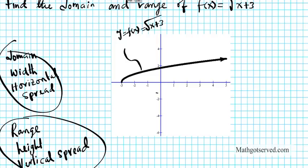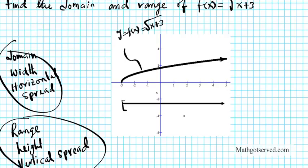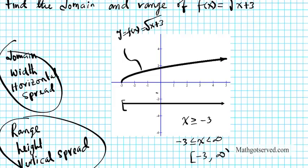Looking at the domain — how wide does the graph go? You notice it starts from a certain x value and goes all the way to the right. It starts from negative 3, with that point included, and goes all the way to the right, meaning x is greater than or equal to negative 3. You can also write this as negative 3 ≤ x < ∞, or using interval notation as [-3, ∞). That is your domain.